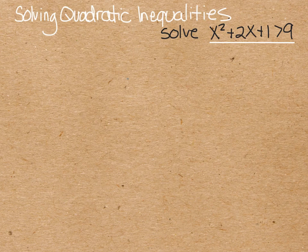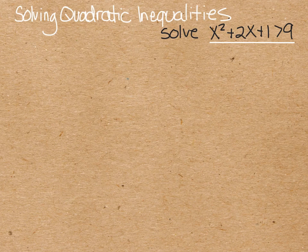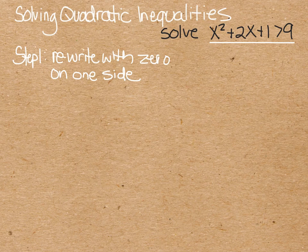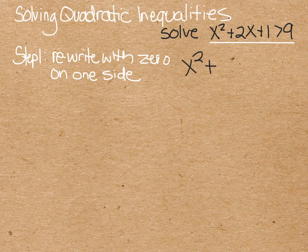So the first thing that I want you to do is to rewrite it. You know how when we're solving quadratics, we always want to set it equal to 0? Well, let's do the same thing with the inequalities. So step 1, we're going to rewrite this equation with 0 on one side. We're going to have x squared plus 2x. And then if I subtract 9, I get minus 8 is greater than 0.